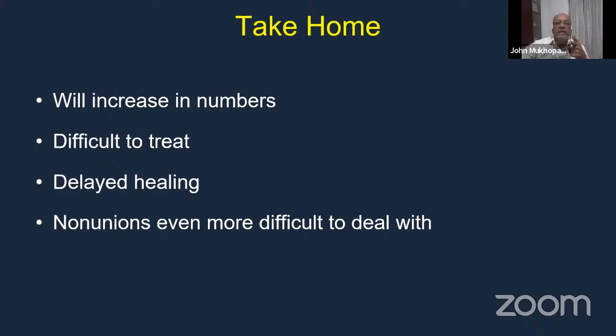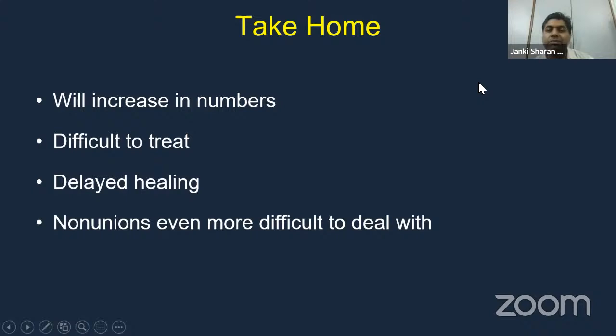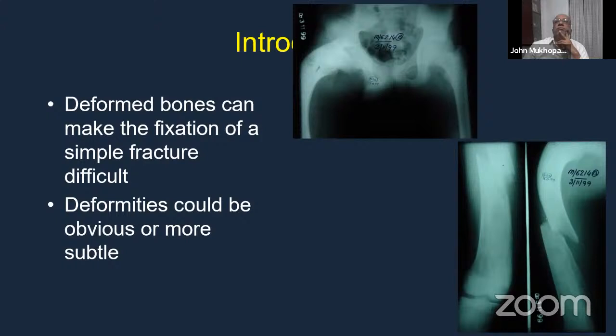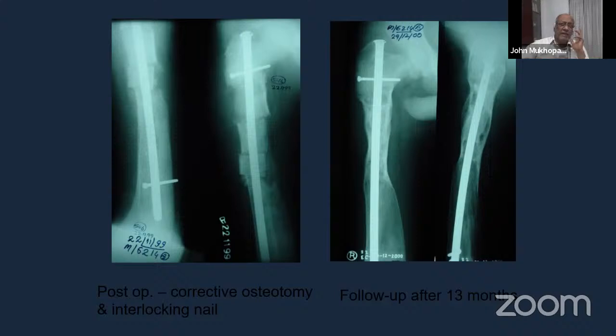This is one of the difficult issues — a patient with fibrous dysplasia with severe deformity. When nailing it, you need to try and correct the deformity. In this case we did multiple open osteotomies — today we can do some of these by closed techniques. This was a long time ago and it went on to heal.